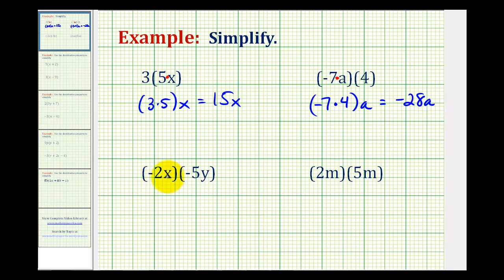Now we have negative 2x times negative 5y. So we can think of this as negative 2 times x times negative 5 times y. So again let's go ahead and change the order of this multiplication using the commutative property, and we'll also change the grouping using the associative property.